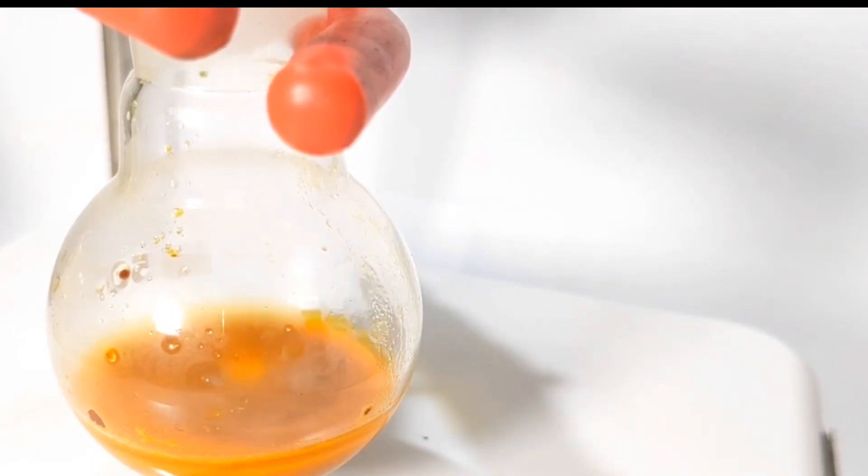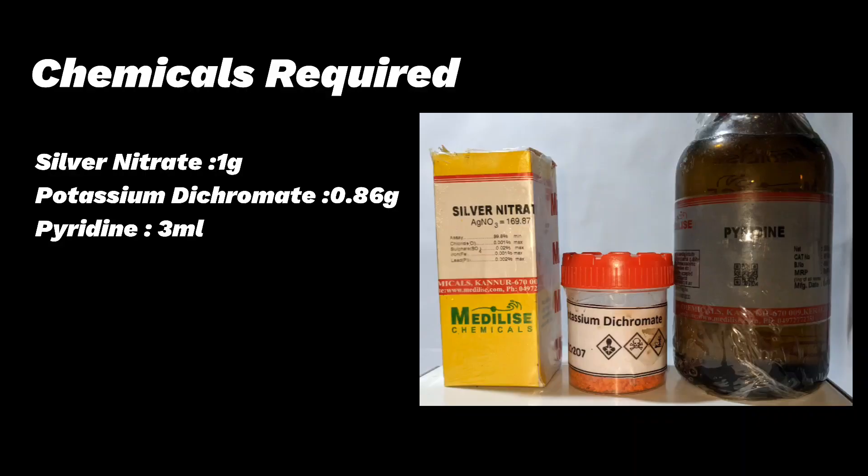With that being said, let's move on to the preparation. Chemicals required are 1 gram of silver nitrate, 0.86 grams of potassium dichromate, and 3 milliliters of pyridine.